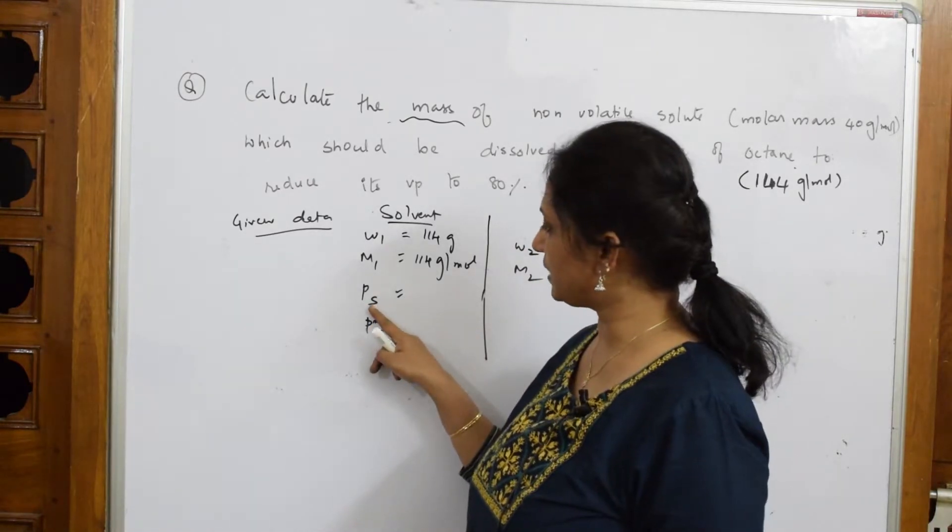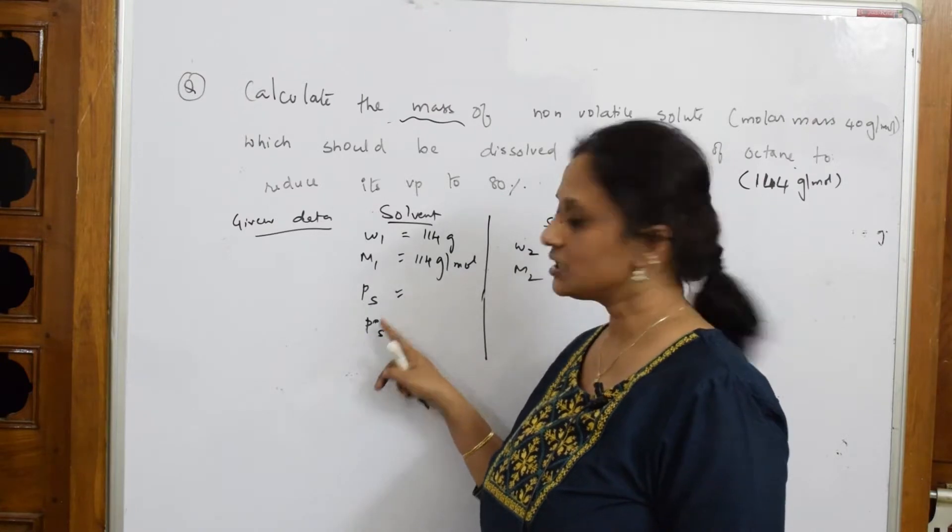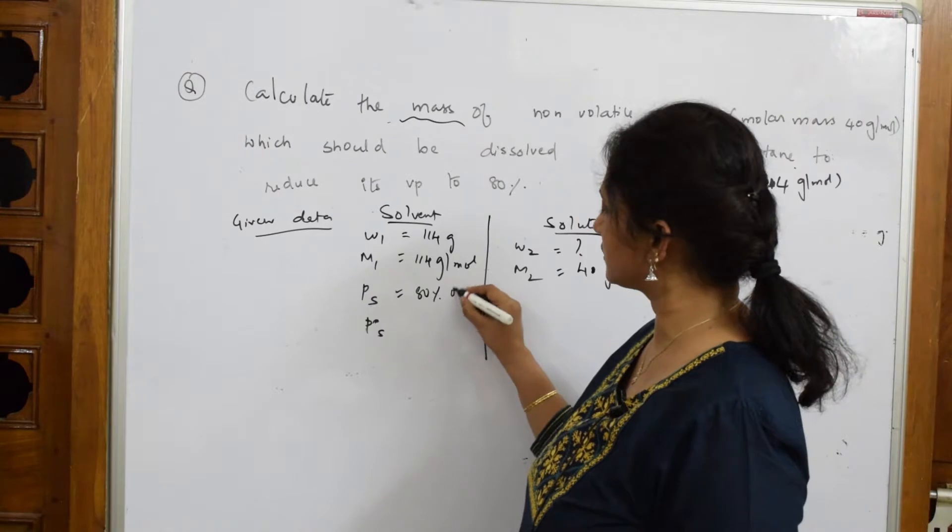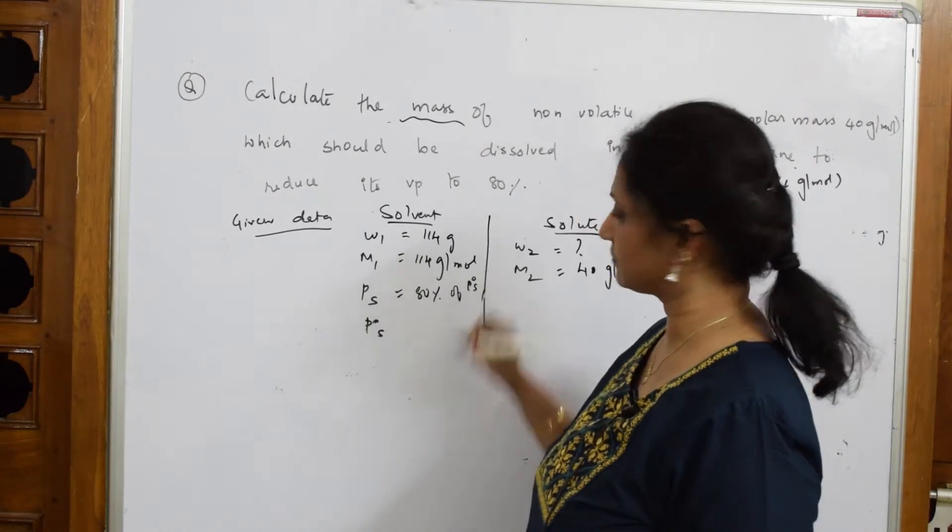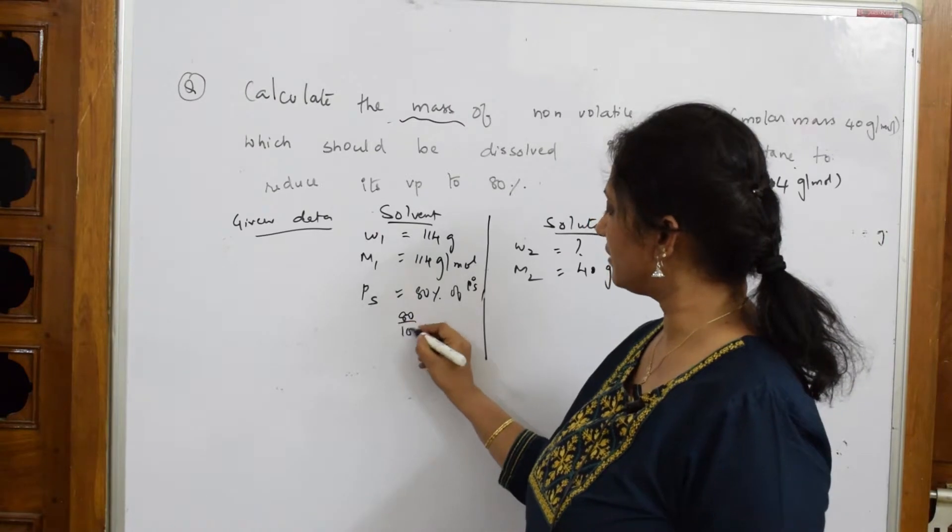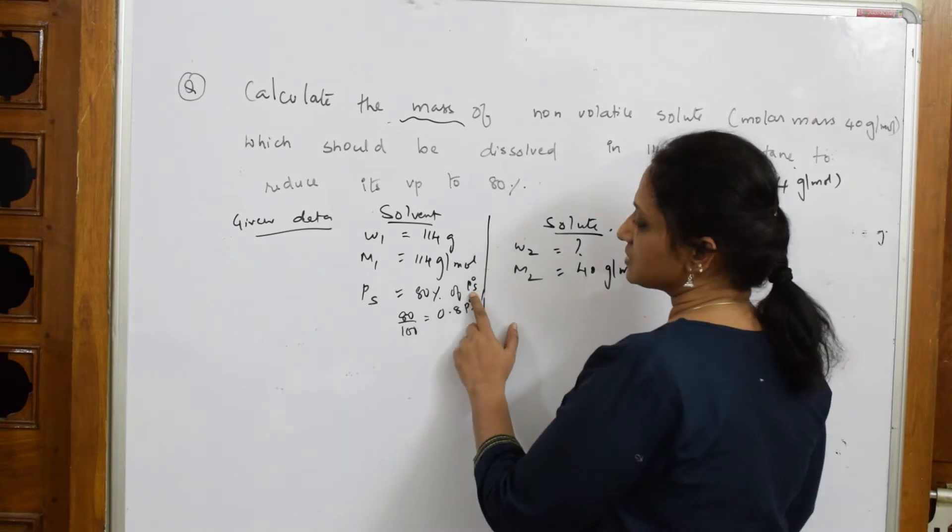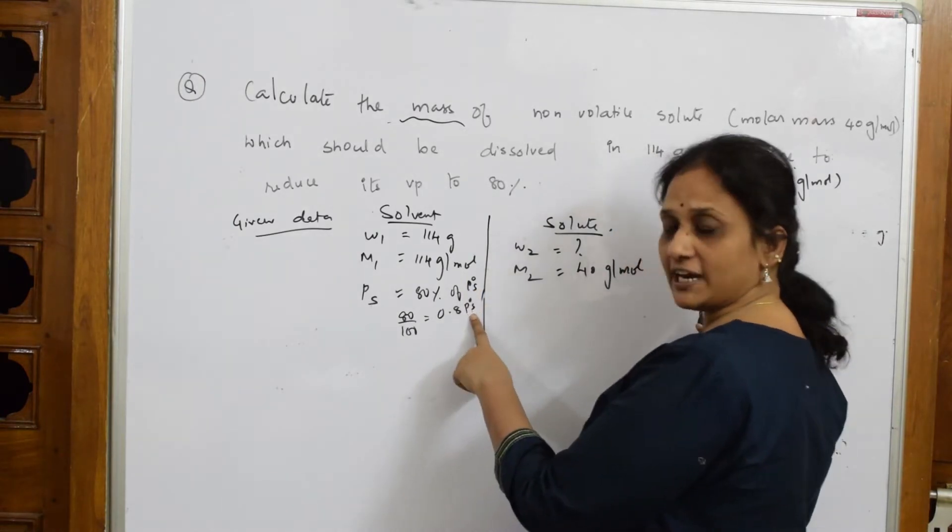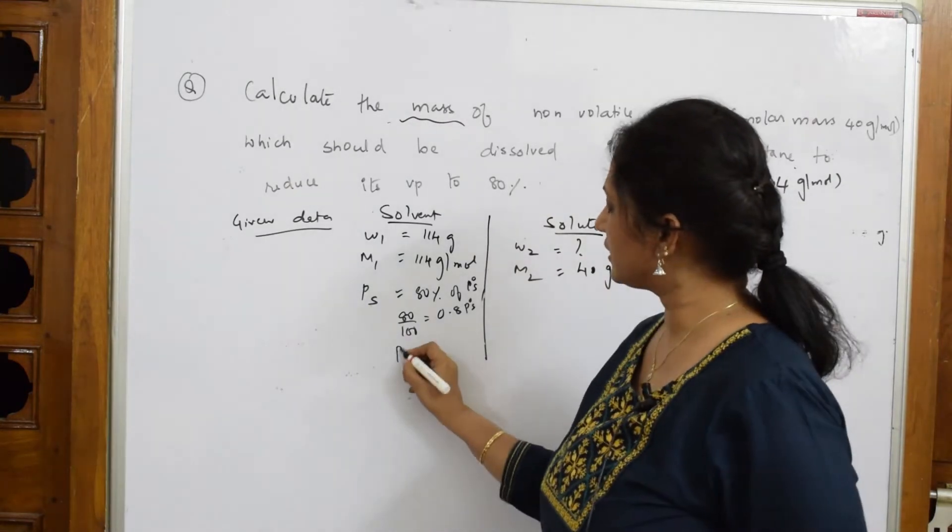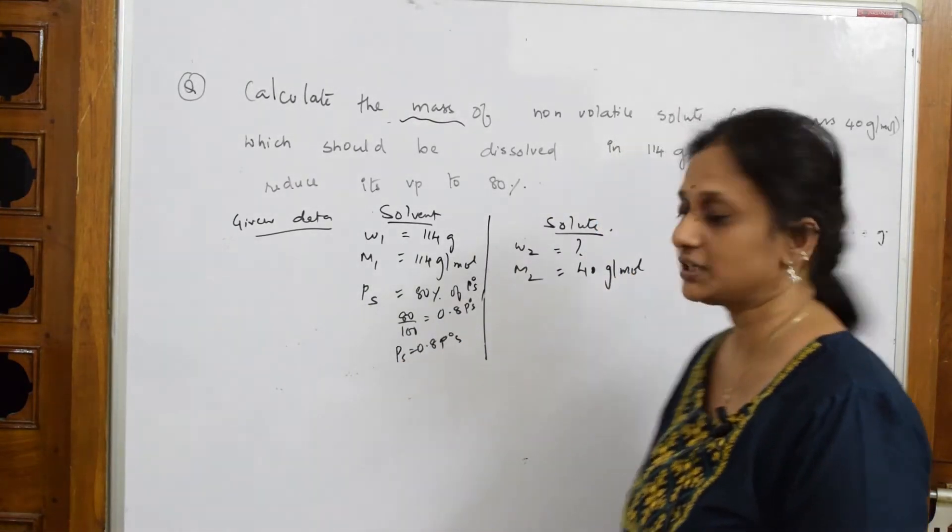So ps is reduced to 80 percent of the original, meaning ps = 80/100 × p0s = 0.8 p0s. Wherever we have ps, we can write it as 0.8 p0s. Now let's solve.